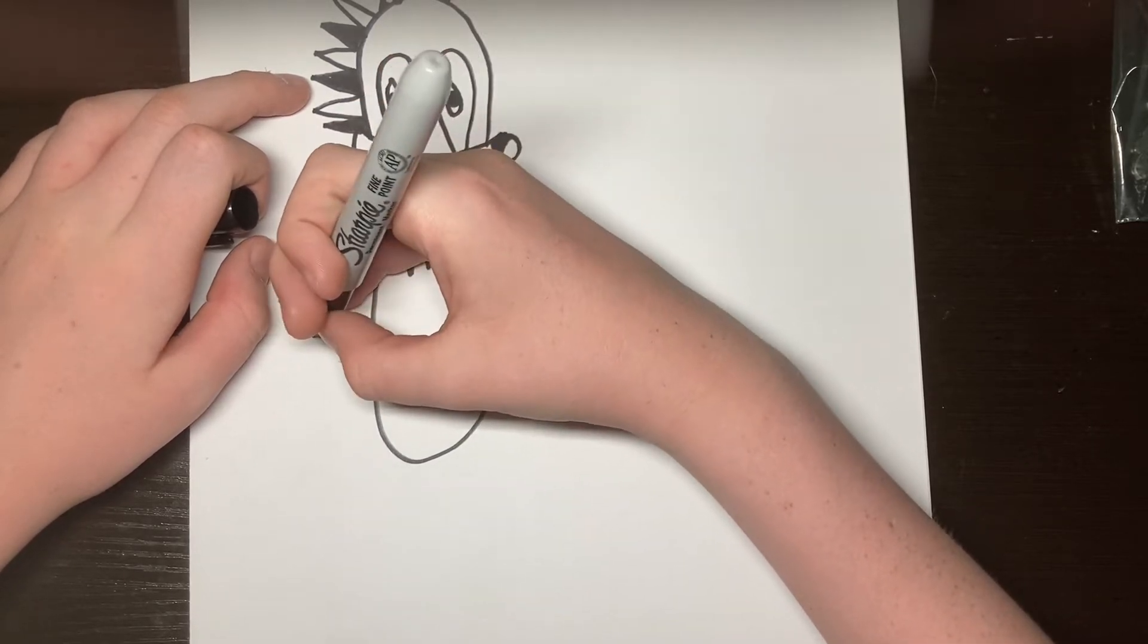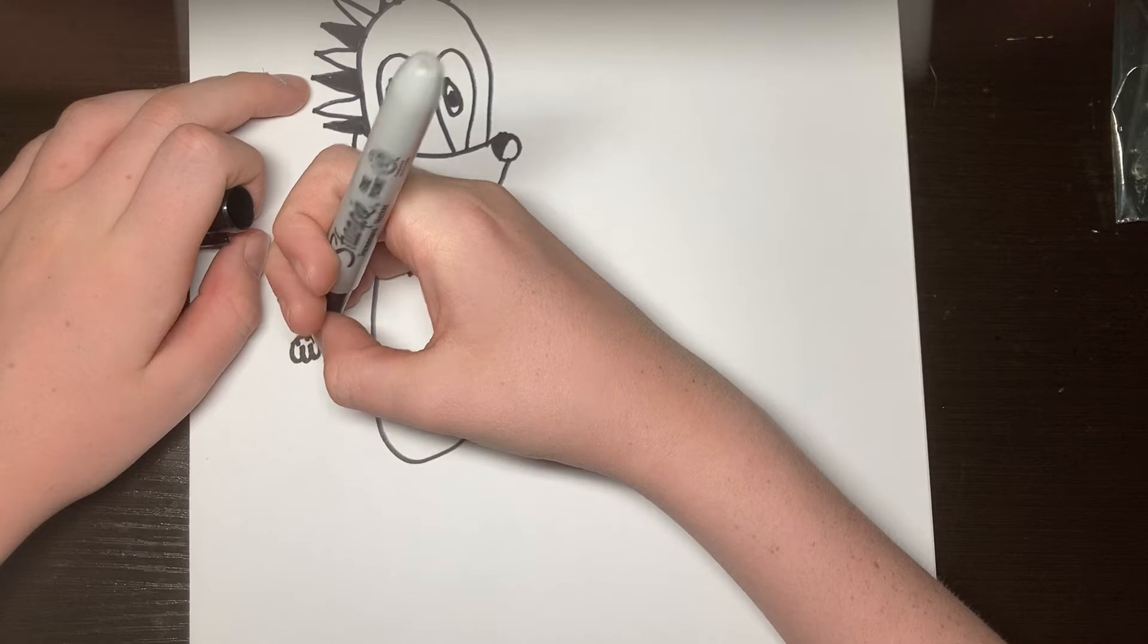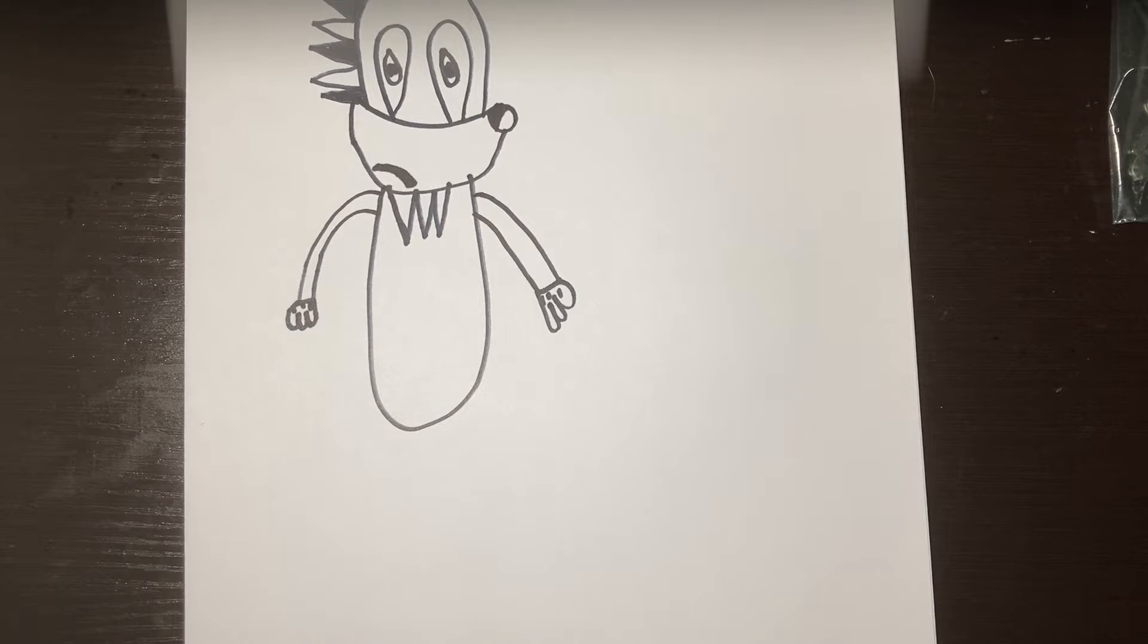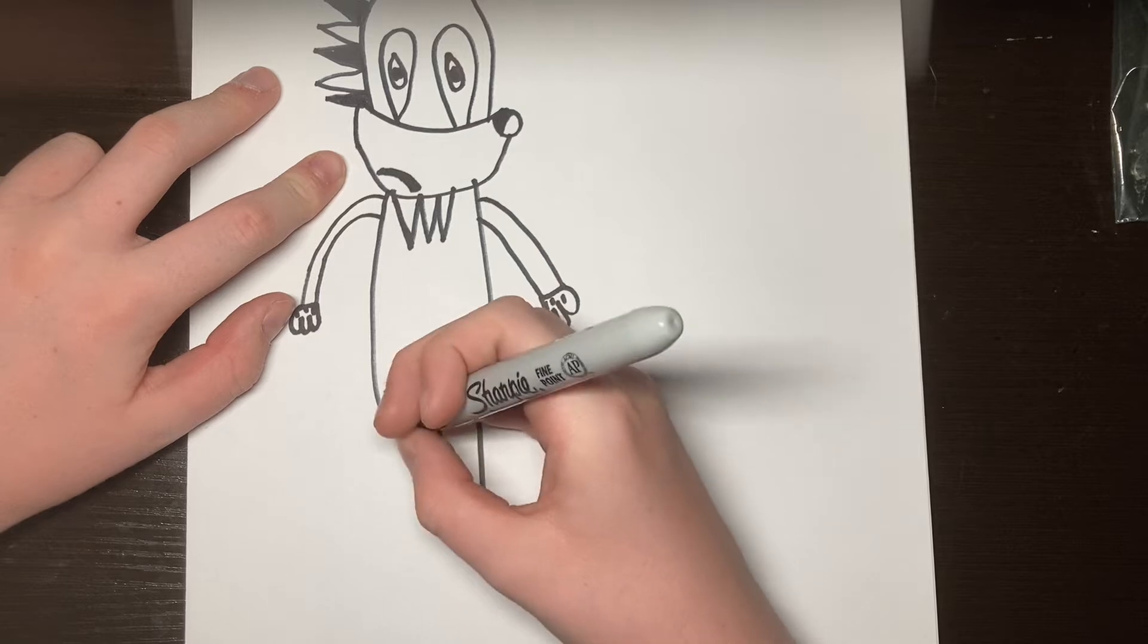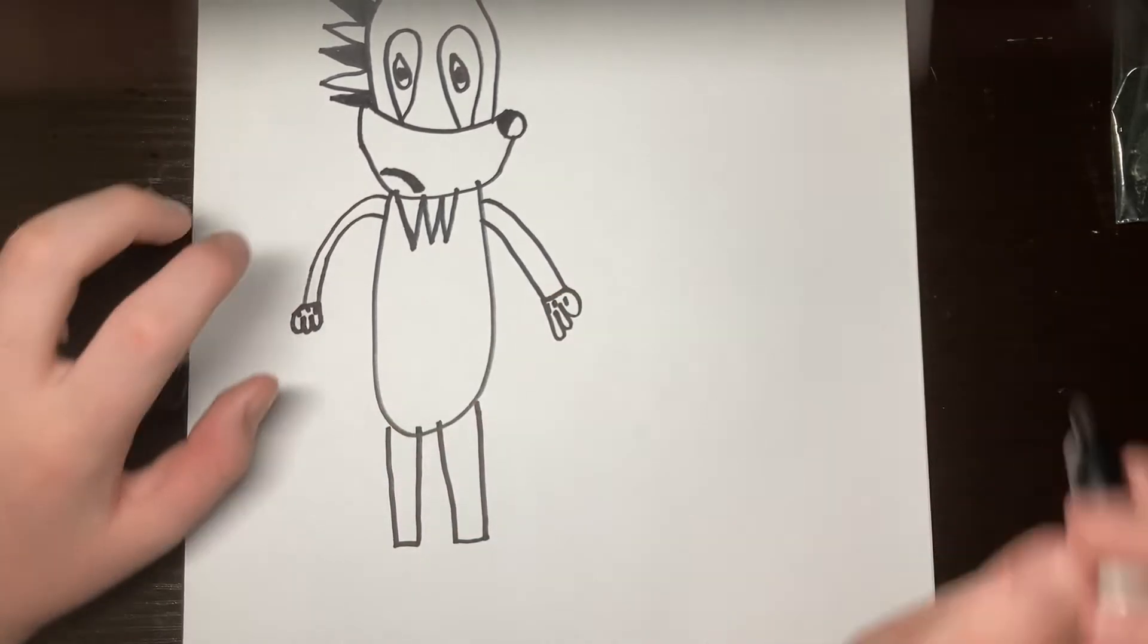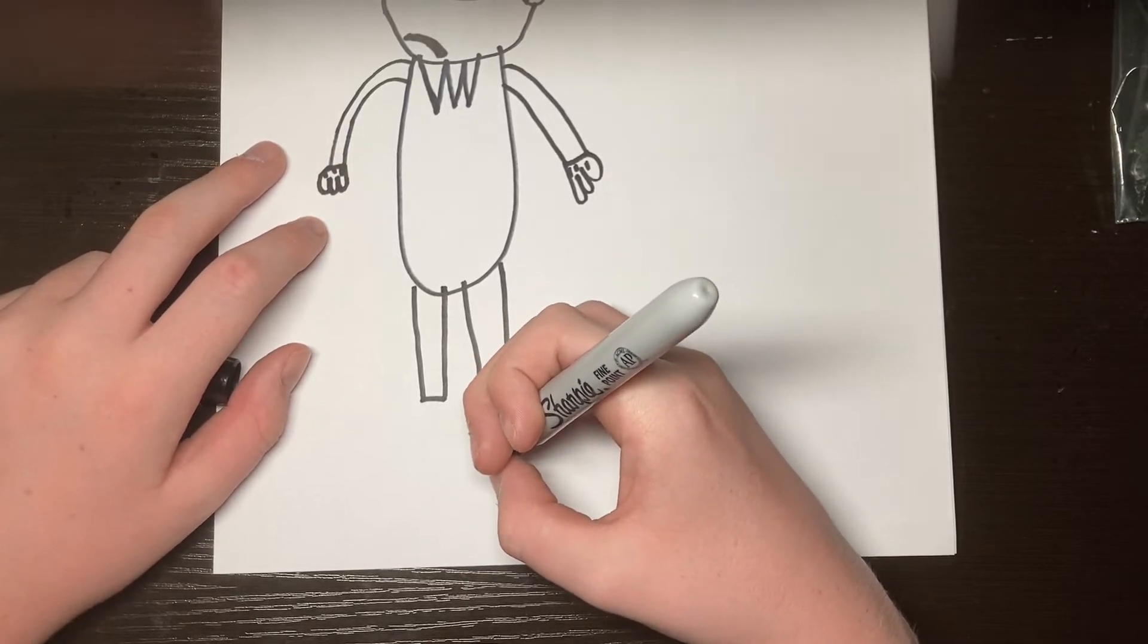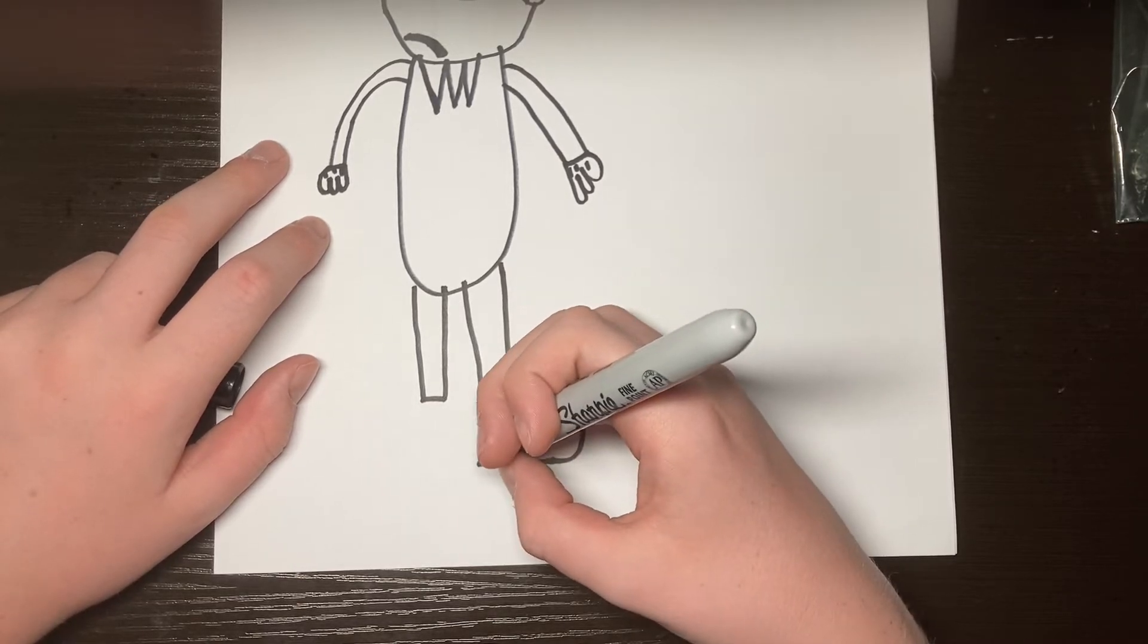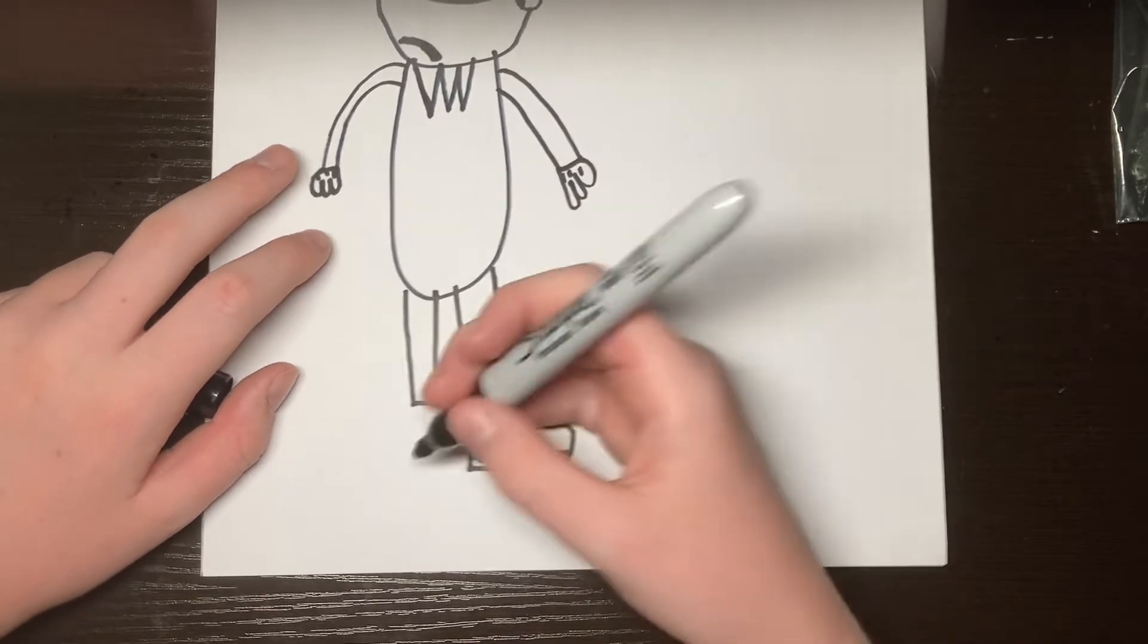And then we draw his legs. And then we draw his shoes. Make a line. A curve like this. Go back up. And then I draw the lines. Like that. To show that yellowness.